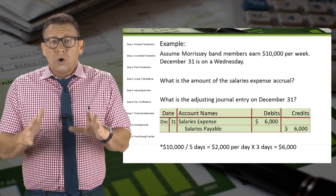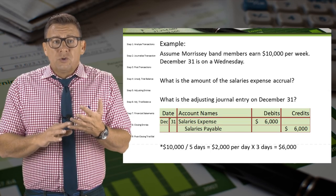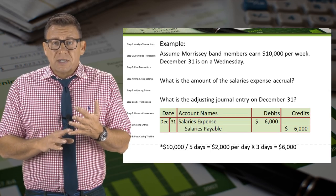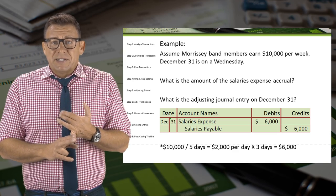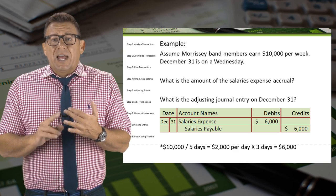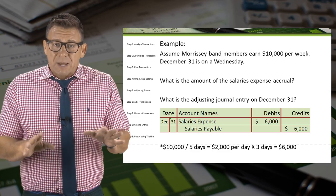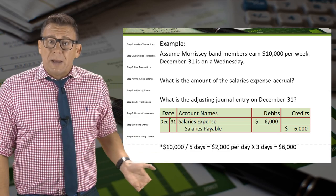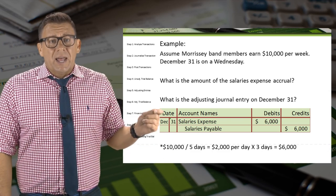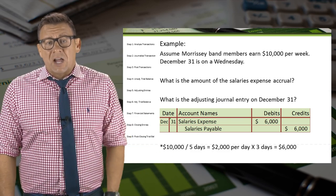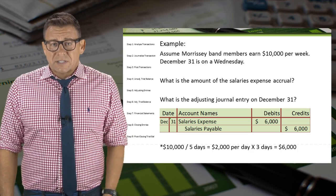When we record an adjusting entry to accrue expense, we always debit an expense account and credit a liability. In this example, we debit salaries expense and credit salaries payable for $6,000.